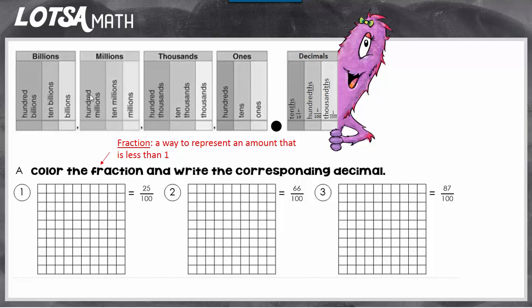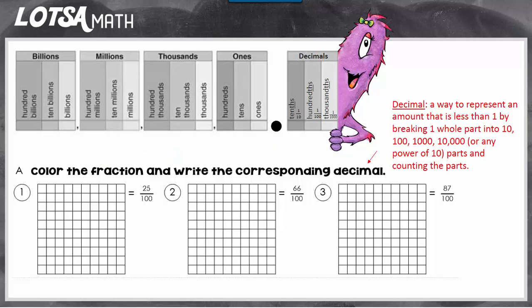A fraction is just a way to represent an amount that's less than one, and then we're going to write the corresponding, which just means matching, decimal. A decimal is also a way to represent an amount that's less than one.